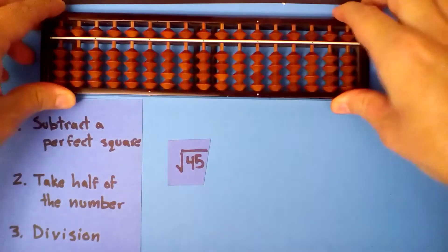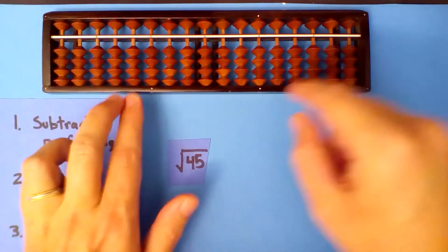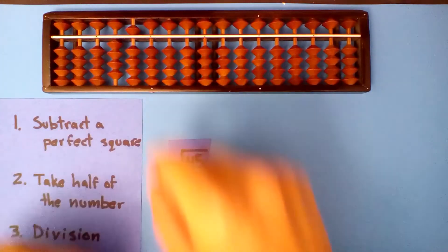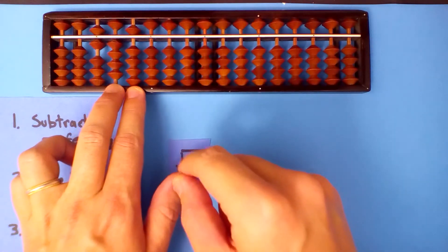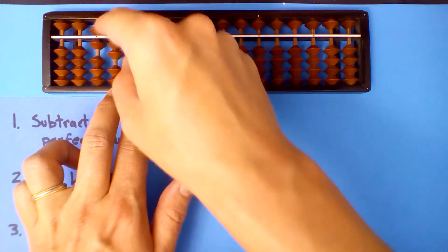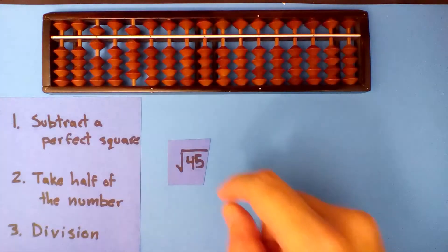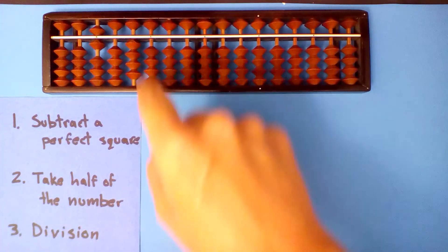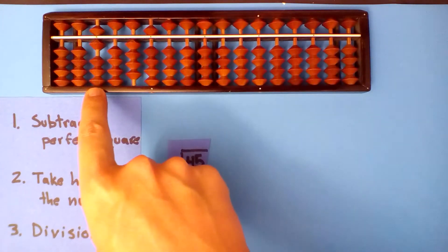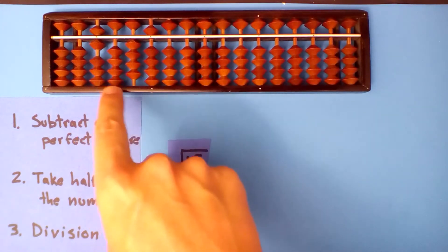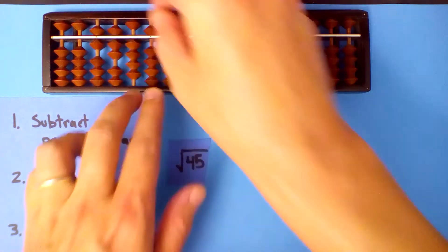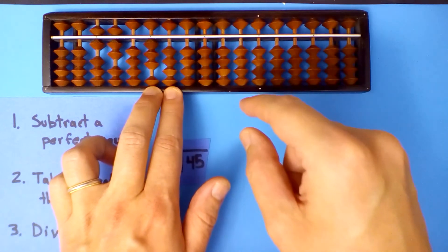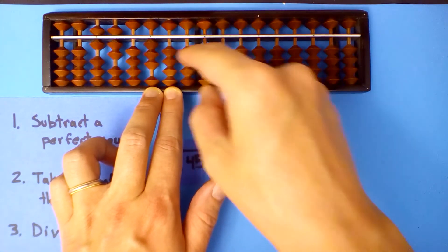Square root of 45 — set up the 45. Subtract a perfect square, 6. 6 times 6 is 36, subtract 36. Take half of what's left: half of 9 is 4, half of 10 is 5. This number into this number — 6 goes into 45, 7 times. 7 times 6 is 42, 7 times itself is 49 — we subtract 24.5.